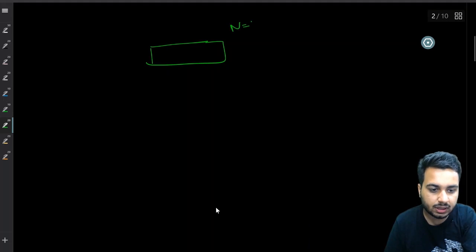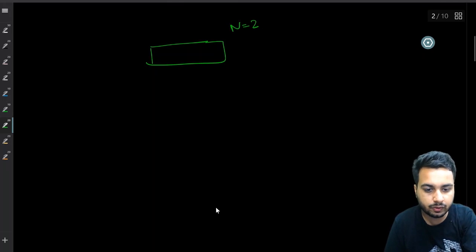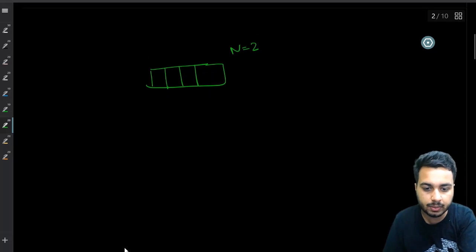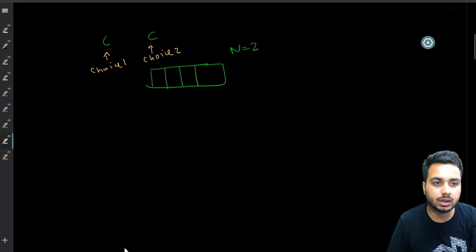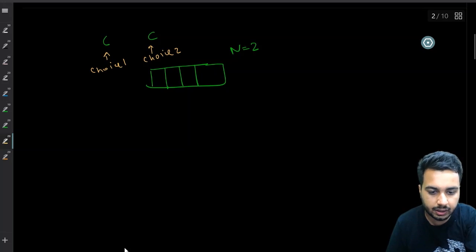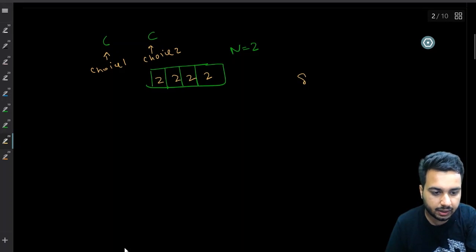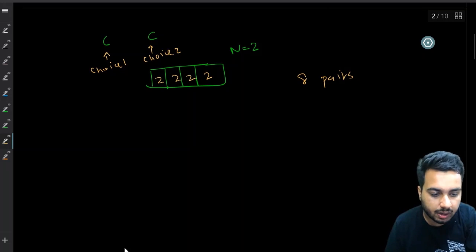If n is 2, that means you have to generate a string in which there are 4 brackets. Every time you have only 2 choices — you take an opening bracket or a closing bracket. So with 2 choices at each of 4 positions you could have easily made 8 such pairs, but all of them are not valid pairs. Some of them would have the same pairs or mismatched closing and opening brackets.